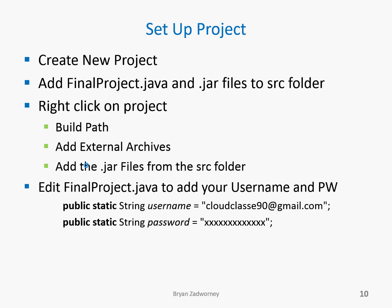First, I opened up Eclipse and created a new project. I added my finalproject.java file and all the jars downloaded from Google Voice to the SRC folder of my new project. I then right-clicked on my project, chose Build Path, Add External Archives, and added the jar files from the SRC folder that I downloaded from Google Voice.